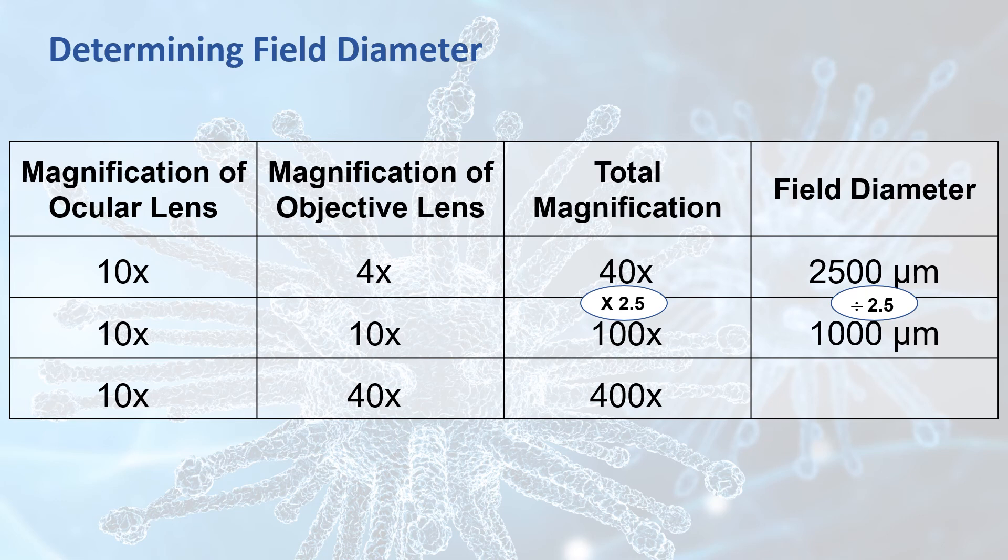In the same way, if you change your objective lens again and go from a medium total magnification of 100 times to the highest possible total magnification of 400 times, you're multiplying your magnification by a factor of 4. This means that the field diameter is divided by the same factor, so it's divided by 4, giving you a field diameter of 250 micrometers.